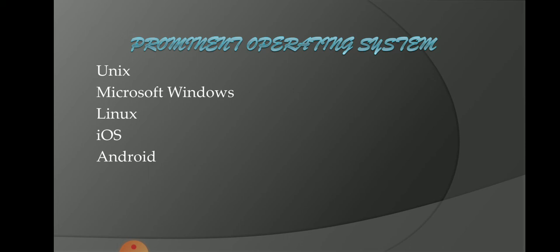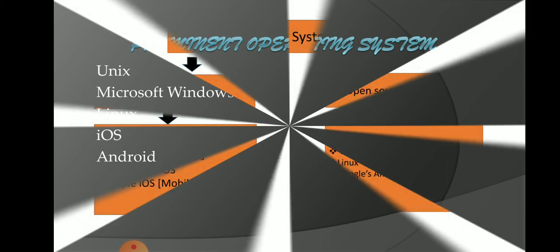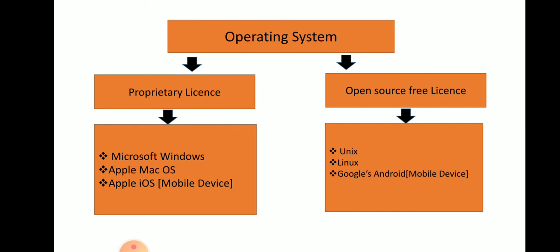Prominent operating systems are Unix, MS Windows, Linux, iOS, and Android. iOS and Android are mobile operating systems. We divide operating systems into two categories: proprietary and open source. Proprietary means closed or non-free software — under this, Microsoft Windows, Apple Mac OS, and Apple iOS are proprietary operating systems. Apple iOS is used in Apple iPhone mobile devices.